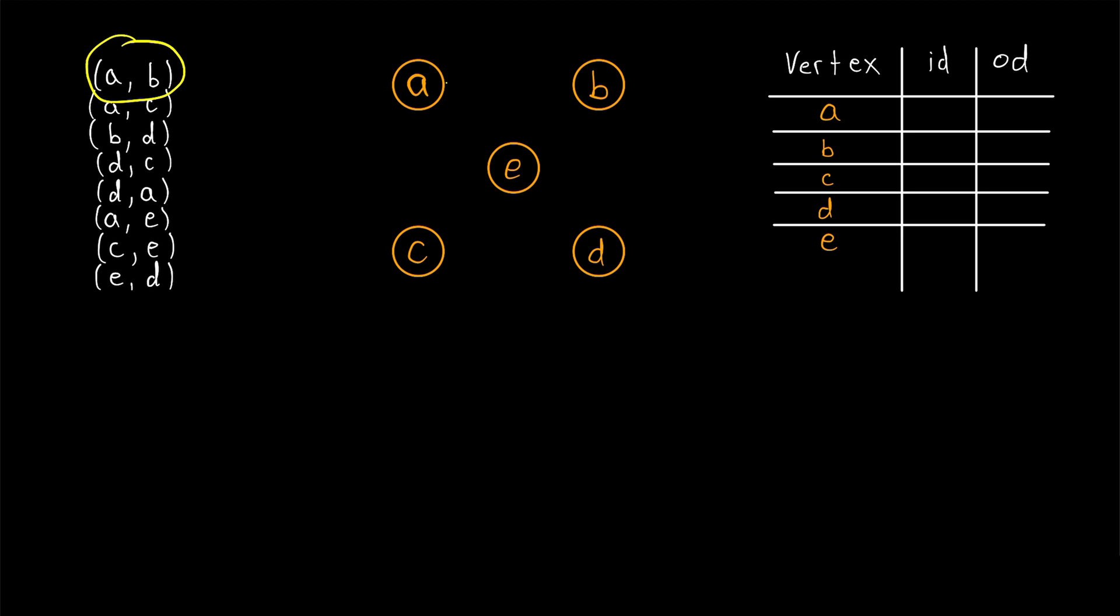This arc starts at A and goes to B. This one starts at A and goes to C, like that. This one starts at B and goes to D. This one starts at D and goes to C. This one starts at D and goes to A. We'll draw something like that. This one starts at A and goes to that middle vertex E. This one starts at C and goes to E. And the last one starts at E and goes to D.